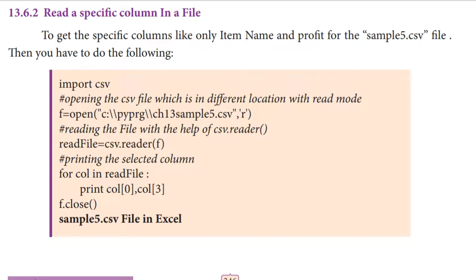We are going to get specific columns — only item name and profit — so only two columns we are going to view from the sample CSV file. Here we have the sample Python program. First, we import the CSV module. Then we open the file using the open function. Then we use read_file equal to csv.reader. We are printing the selected columns using print, with column 0 and column 3. With the help of a for loop, we display the particular column values.